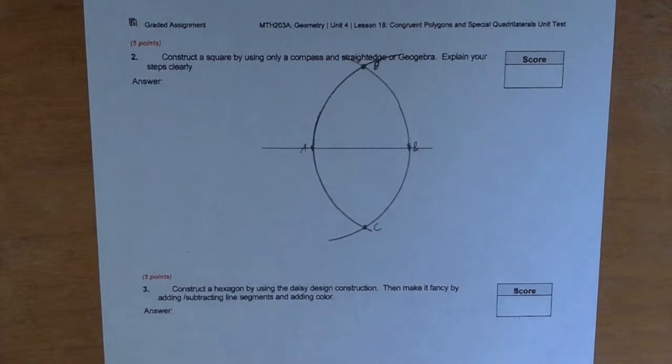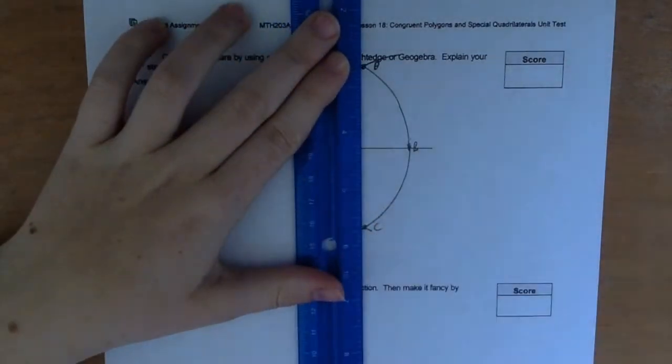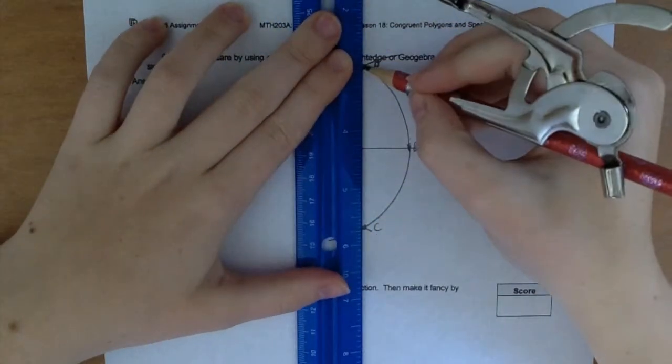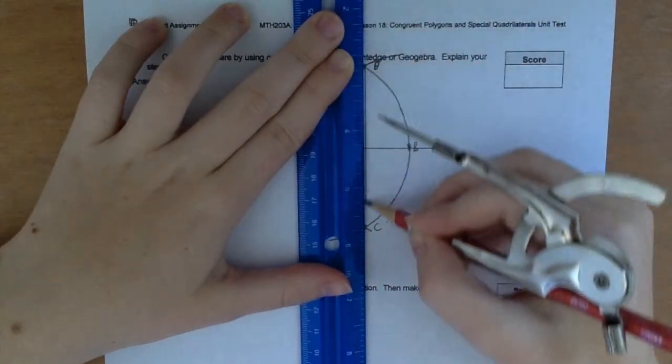And then we take our straight edge, and between those two little points that we just made, we create DC.